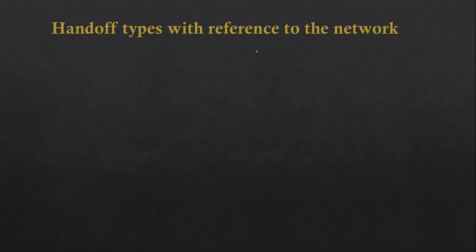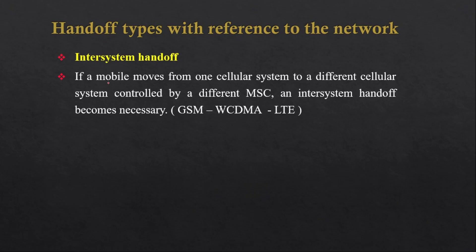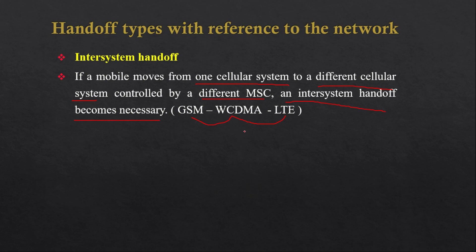The last topic is handoff types with reference to network — inter-system handoff. What we discussed previously was intra-system handoff, within one system such as GSM or CDMA. Handoff is also possible between different cellular systems connected by different MSCs — for example, from GSM to WCDMA, or WCDMA to LTE. You may have seen on your phone switching between 3G and 4G; that is an inter-system handoff.